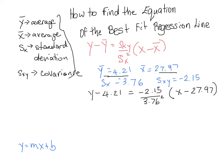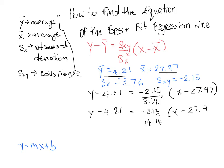The next step is to simplify the fraction. We have y minus 4.21 equals negative 2.15. Now squaring 3.76 gives approximately 14.14. We can then simplify the fraction further by dividing negative 2.15 by 14.14, which gives a value of approximately negative 0.152, times x minus 27.97.